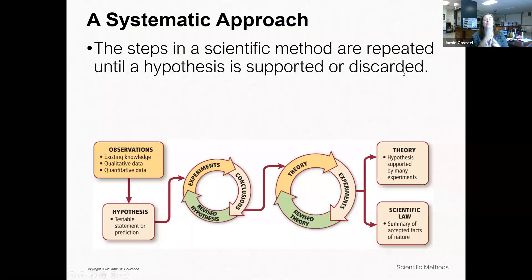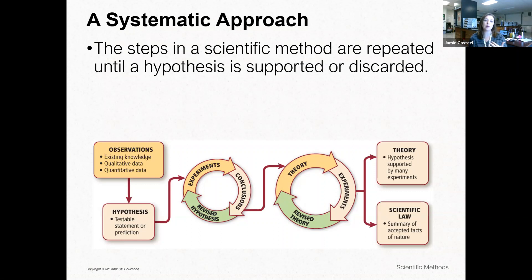The steps are repeated until a hypothesis is either supported or discarded. You can't just get one result, find it's wrong, and stick with it — that is manipulating data. Science is all about what can be proven with data. We don't go on what we think; we have to prove whether something is true or not with data to back it up.